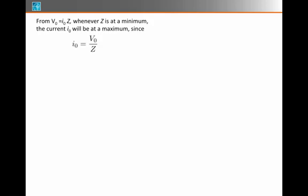Remember that the current amplitude is related to the voltage amplitude through this relation I0 equals V0 over Z. Whenever Z is at a minimum, then I0 will be at a maximum. That's the most current you can get out of the circuit.